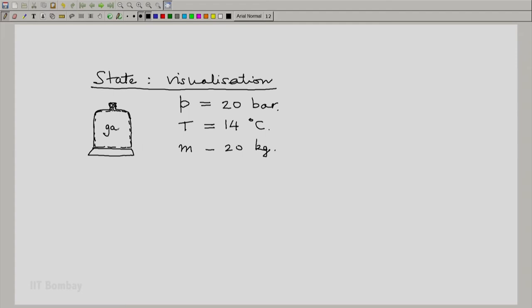And our system is this gas. One way of noting this down is: our system and its state is gas, list of properties, quantification of properties. So P is 20 bar, T is 14 degrees C, and mass is 20 kg.